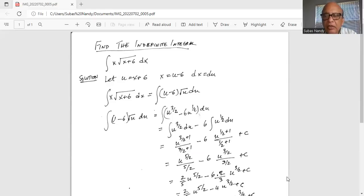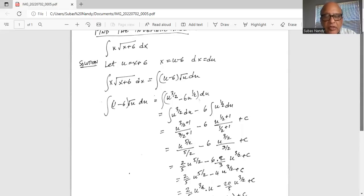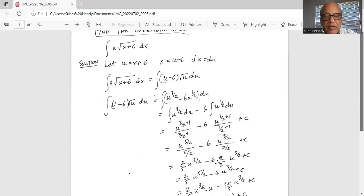Now we will transfer the 5 over 2 from the denominator to the numerator when it becomes 2 over 5 multiplied by u to the power of 5 over 2.